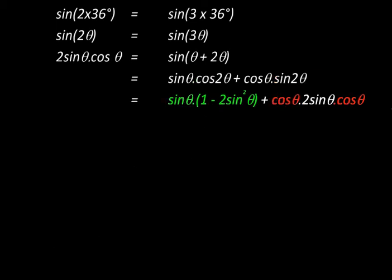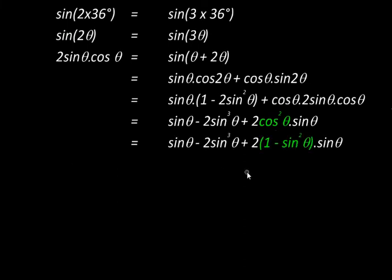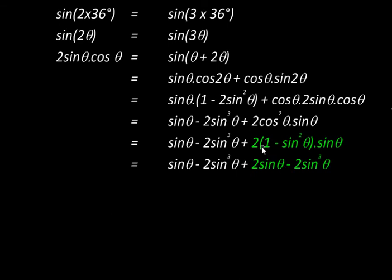We open the bracket so that we get sine θ into 2 sine cubed θ, while the two cos θ terms get multiplied to give cos squared θ. This expression contains all sine θ or its powers, except cos squared θ, which can be expressed as 1 minus sine squared θ. That will help us get this expression entirely in terms of the sine function and its powers. Opening the bracket gives 2 sine θ minus 2 sine cubed θ.